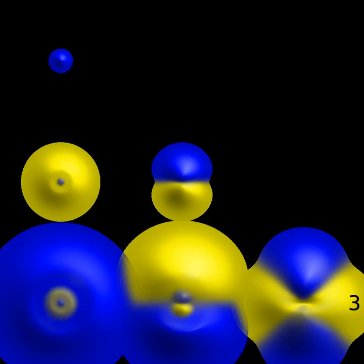De Broglie's prediction of a wave nature for electrons led Erwin Schrödinger to postulate a wave equation for electrons moving under the influence of the nucleus in the atom. In 1926, this equation, the Schrödinger equation, successfully described how electron waves propagated.